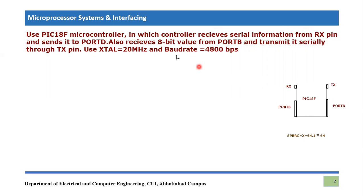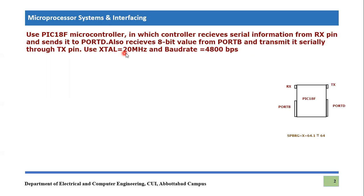We also have to receive an 8-bit value from Port B, so Port B is our input port, and transmit it serially through the TX pin in asynchronous mode. Additionally, the specifications require a crystal oscillator of 20 MHz and a baud rate of 4800 bits per second.